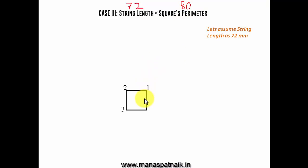Let's take on case number 3. And as far as case 3 is concerned, string length is, in fact, less than the square's perimeter. Now, here, I'm going to be assuming that the string length is 72, and you know very well that the square's perimeter is 80. Let's have a square, 1, 2, 3, 4. Let's draw a line, which is going to be equivalent to the square's perimeter. We're going to fit this 72 millimeters. Just wait and watch. Now, this is 80 millimeters.